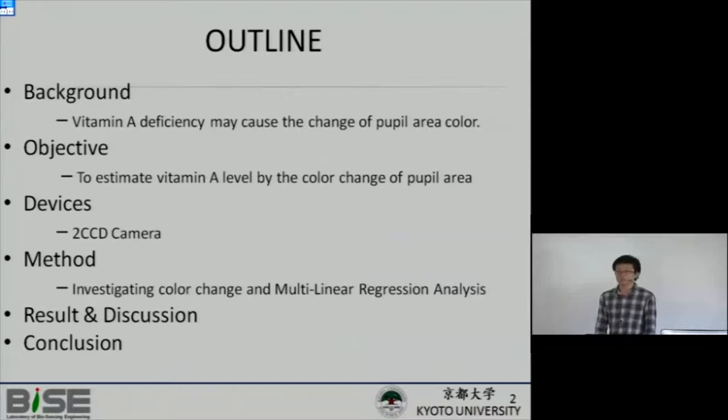This is the outline of my presentation. In background I will introduce how vitamin A deficiency may cause the change of pupil color. Our objective is to estimate vitamin A level by the change of pupil color using a 2CCD camera. The method is investigating color change and doing multilinear regression analysis using color factors.